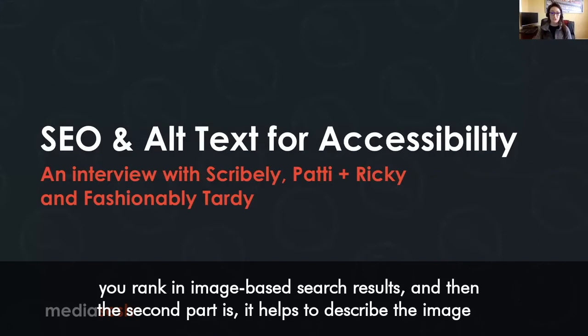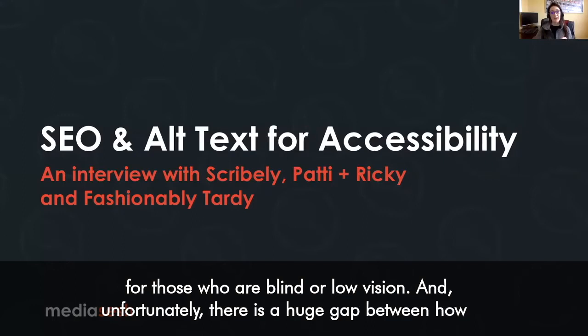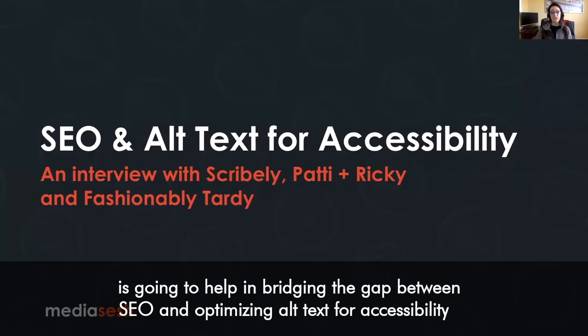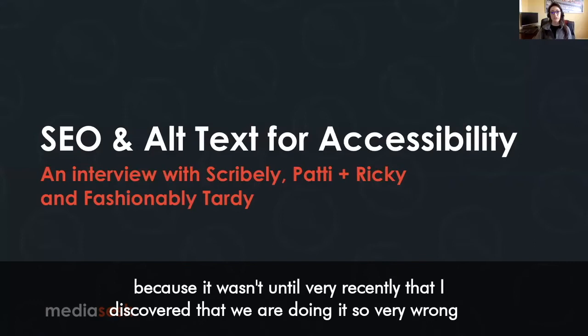The second part is it helps to describe the image for those who are blind or low vision. Unfortunately, there is a huge gap between how we are describing images and how we should be describing them. Today's conversation is going to help bridge the gap between SEO and optimizing alt text for accessibility, because it wasn't until very recently that I discovered we are doing it so very wrong and that we could be doing it so much better.